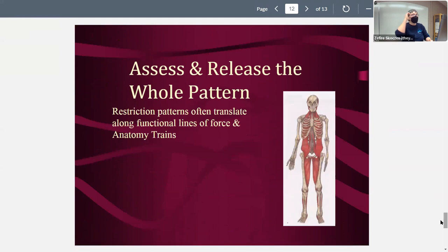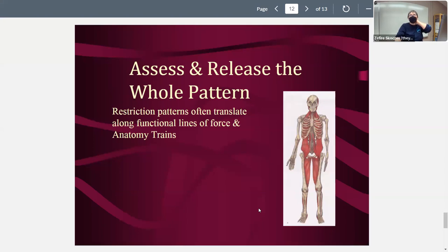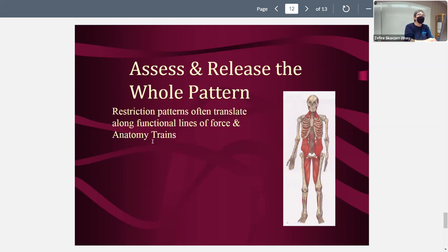We want to assess the whole pattern. A client might have just plantar fasciitis, just tennis elbow, or just neck pain — but those things are never truly just that area. There's always involvement upstream, downstream compensation patterns, fascial relationships, synergists, and antagonists. We're looking at the whole pattern when we treat. Your chapter started talking about anatomy trains and lines of force, but we'll actually look at those bigger patterns including anatomy trains in labs when we specifically release them.